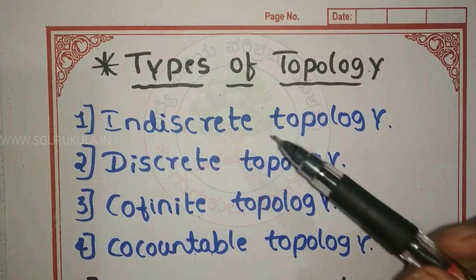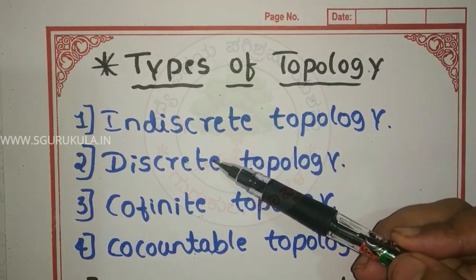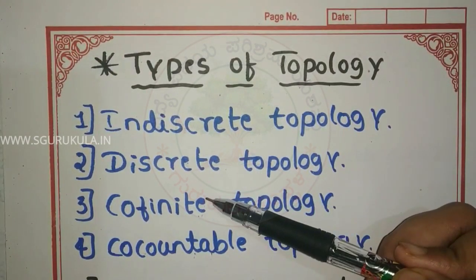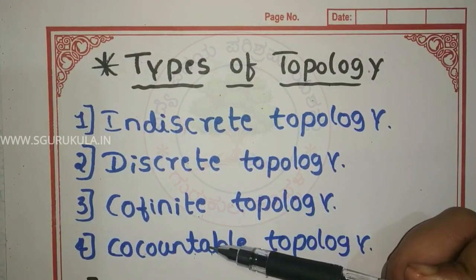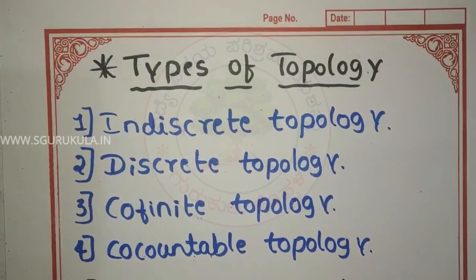In this, we have four types of topology: Indiscrete topology, Discrete topology, Co-finite topology, and Co-countable topology. So one by one, let us analyze the definitions.